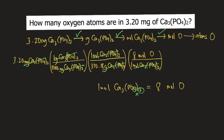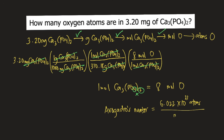For the last step, we need to convert moles of oxygen to atoms of oxygen. To do this conversion, we make use of Avogadro's number, which is 6.022 times 10 raised to 23 atoms per mole. So 1 mole of oxygen contains 6.022 × 10²³ atoms of oxygen. Moles of oxygen will cancel, and the final unit is atoms of oxygen.